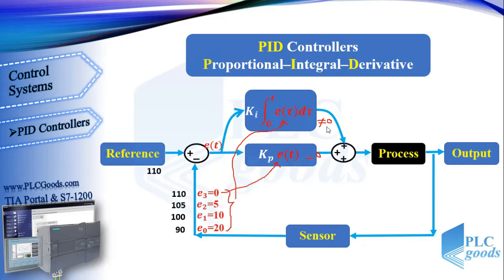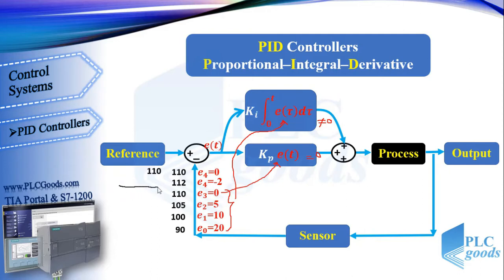Therefore, unlike the proportional controller, the PI controller can open the filling valve sufficiently even when the error is zero, so the integral term compensates for the proportional controller's weakness. The PI controller has a small problem that can be ignored in most industrial processes: when the level reaches the reference value, due to the integral term the filling valve remains open, causing the liquid level to rise again. When the error becomes negative the system returns to reference, and the integral term causes the controller output to fluctuate slightly, which disappears over time.